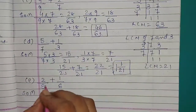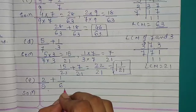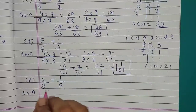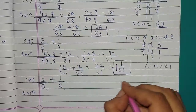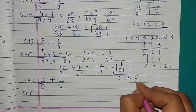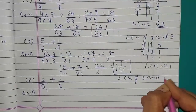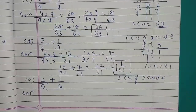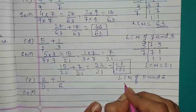Question number E: 2 upon 5 plus 1 upon 6. These are unlike fractions. So we will take LCM of 5 and 6.